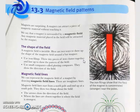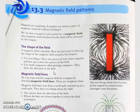The iron filings will be aligned to show the magnetic field. The second method is to use a small compass, also called a plotting compass, which shows the direction of the field.